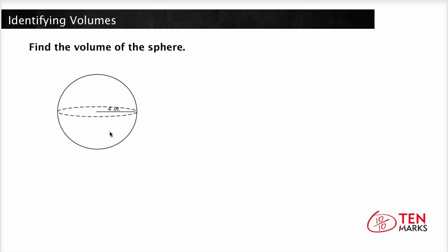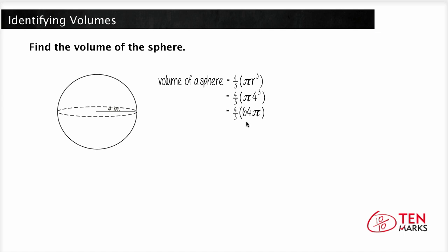Find the volume of this sphere. We are given that the radius equals 4 inches. Since the formula for the volume of a sphere is 4 thirds times pi r cubed, we substitute 4 for r and get 4 thirds times pi times 4 cubed. 4 cubed is 64, and when we multiply 64 by 4, we get 256 over 3 pi. So the volume of the sphere is 256 over 3 pi inches cubed.